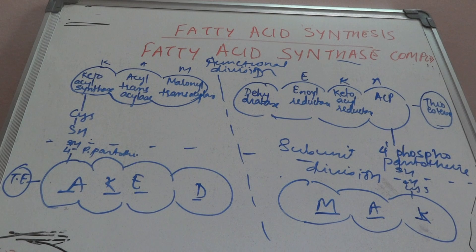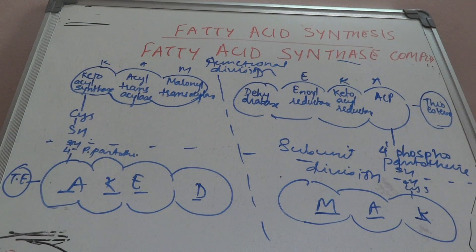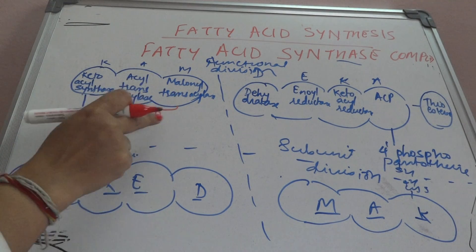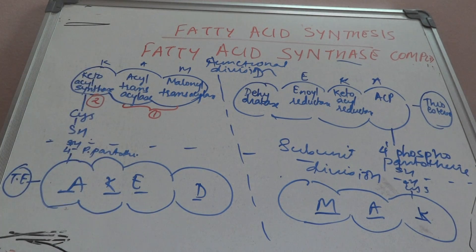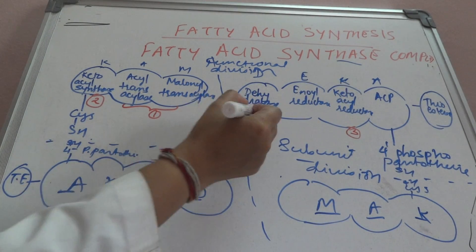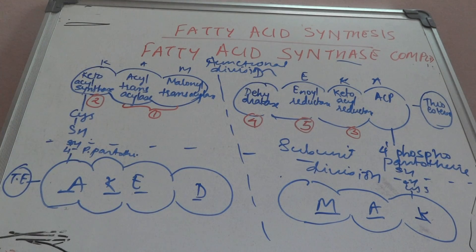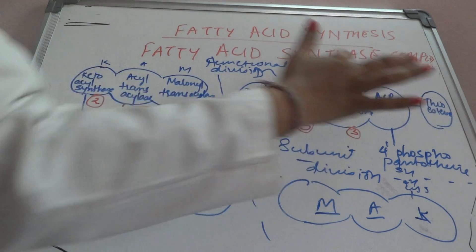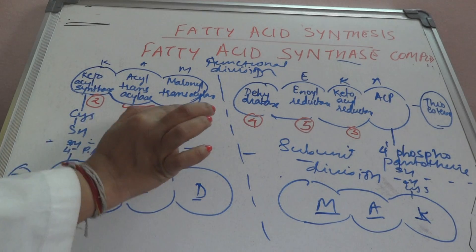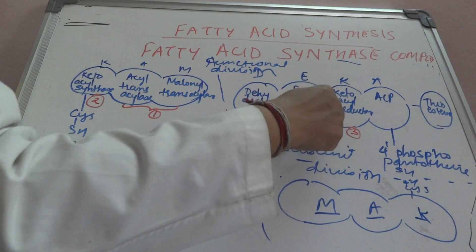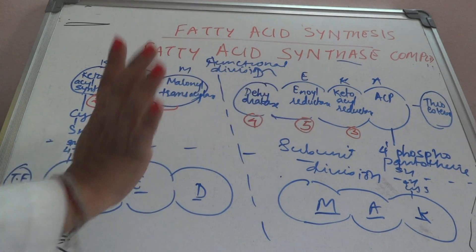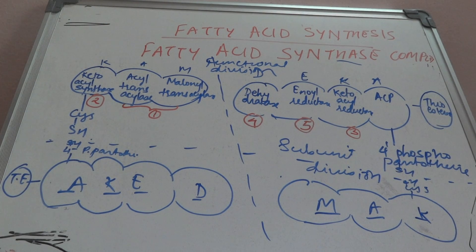There is a way to remember the order in which each enzyme acts. Acyl Transacylase and Malonyl Transacylase both participate in reaction 1. Reaction 2 is catalyzed by Ketoacyl Synthase. Reaction 3 is by Ketoacyl Reductase. Reaction 4 is by Dehydratase. Reaction 5 is by Enoyl Reductase. Finally, Thioesterase is also present in the fatty acid synthase complex. This is the functional division; the other is the subunit division.